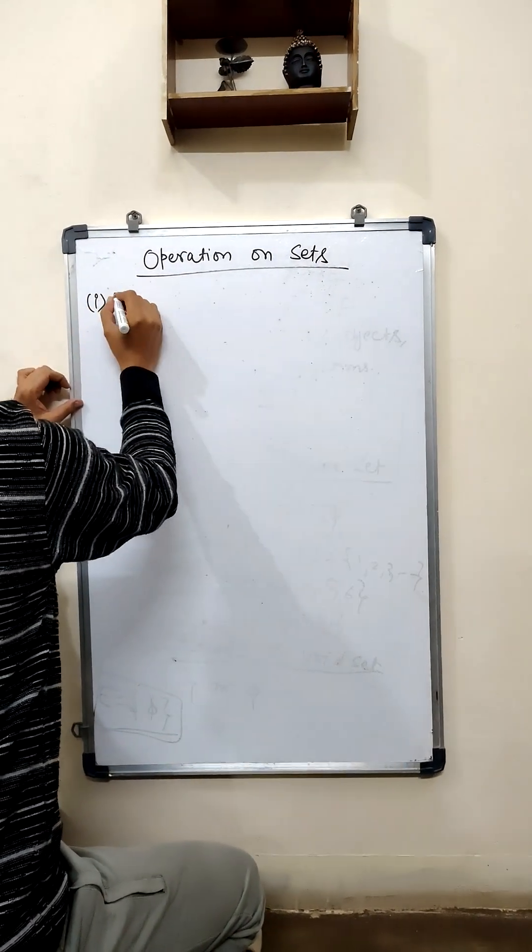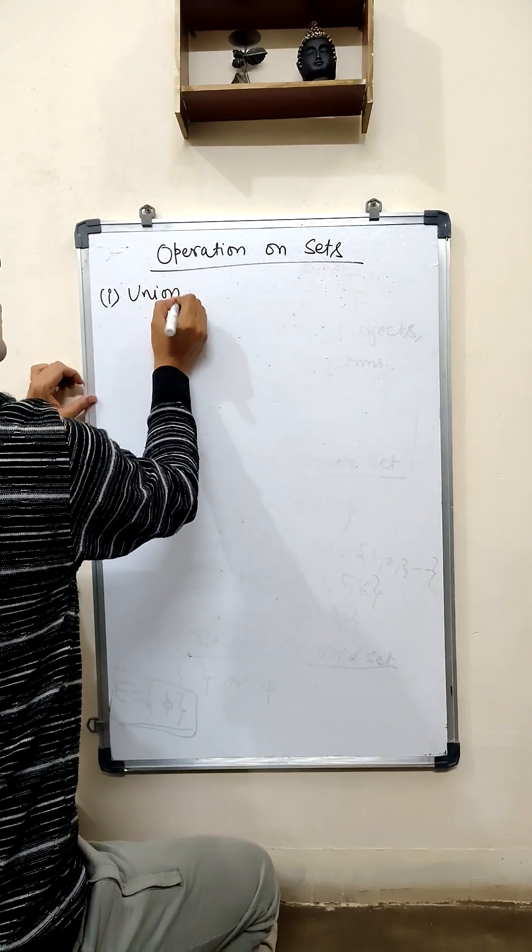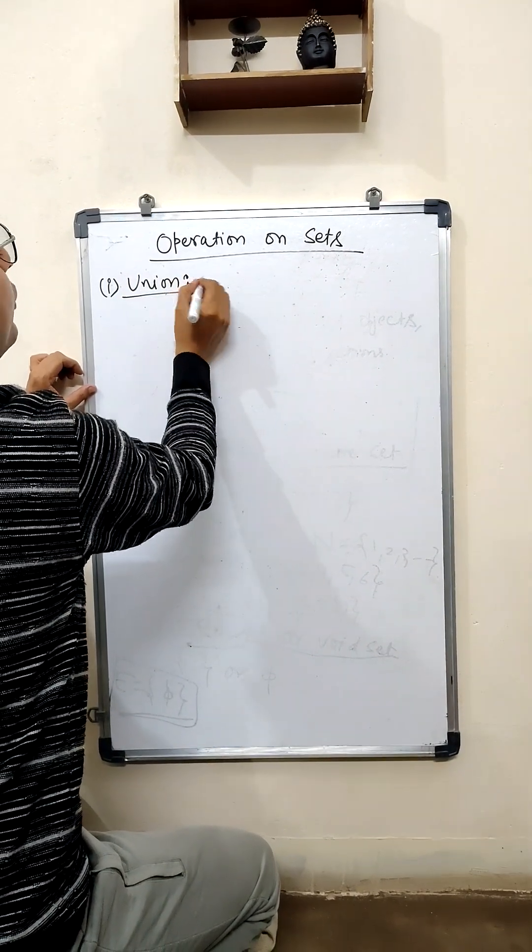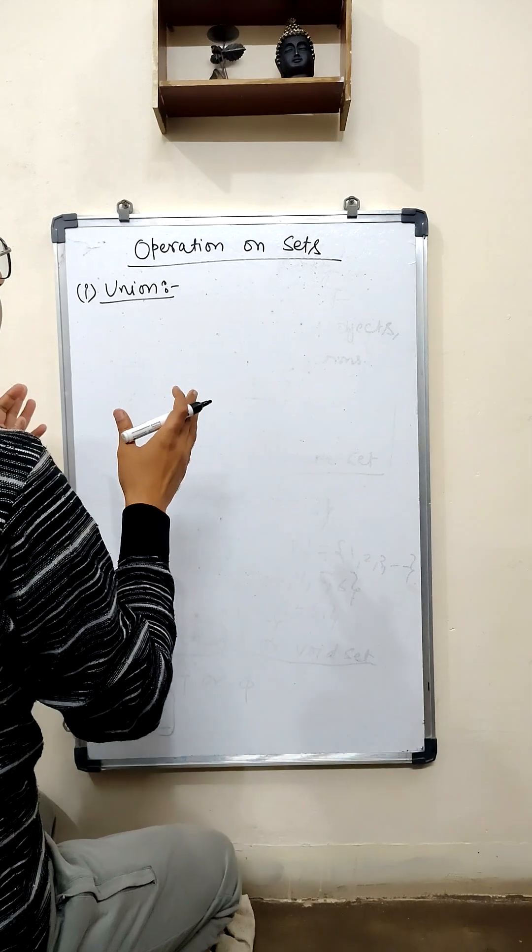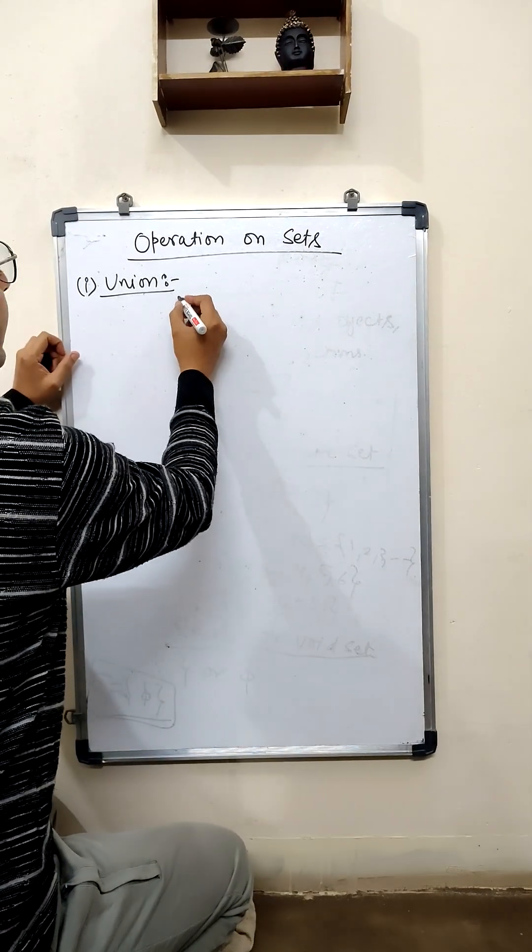We will discuss the first operation, the union of sets. Union is just combining all the elements of two or more sets.